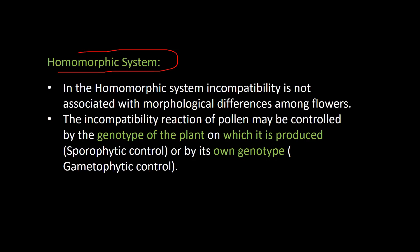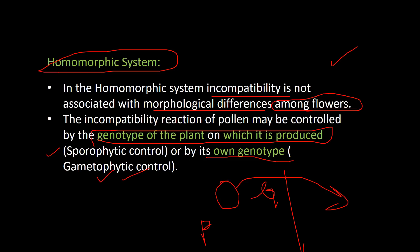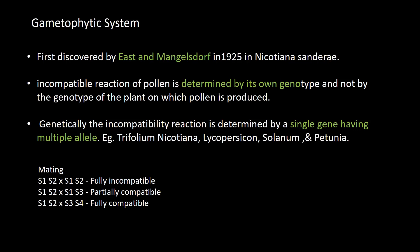In the homomorphic system, incompatibility is not associated with morphological differences among flowers. The incompatibility reaction of the pollen may be controlled by the genotype of the plant on which it is produced — called sporophytic control — or by its own genotype — called gametophytic control. When the influence occurs in the pollen grain itself, it is gametophytic; when it is on the genotype of the plant producing it, it is sporophytic.